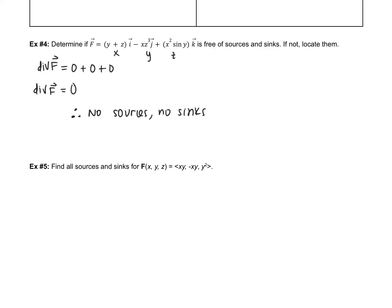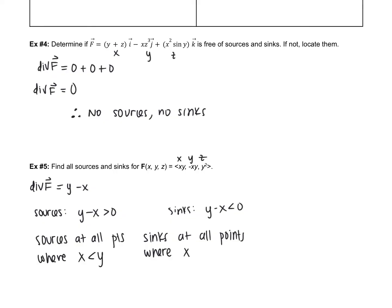Okay. Example 5. This time I'm telling you there are sources and sinks, and I want to know where they are for this given vector field F. So we are going to start by finding the divergence of F. Partials again with respect to x, y, and z. So that's going to be y subtract x. So sources, like we said above, are going to happen when that divergence is greater than 0. Sinks are going to happen when that divergence is less than 0. So there are sources at all points where x is less than y, and there are sinks at all points where x is greater than y.